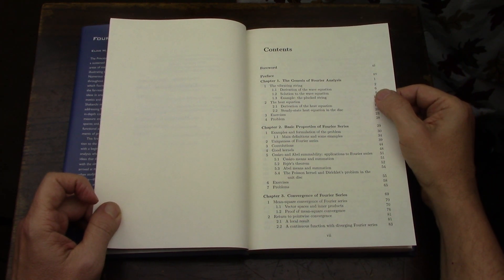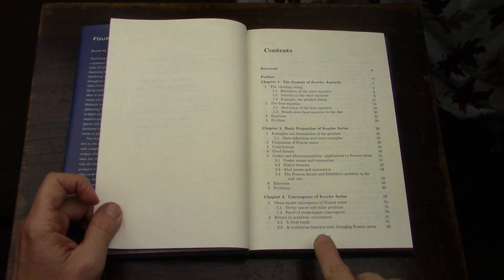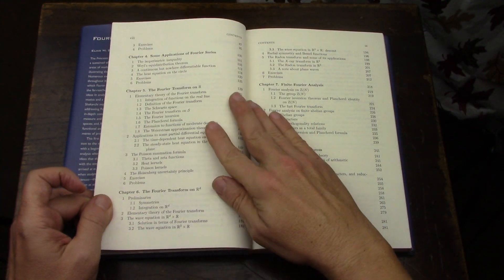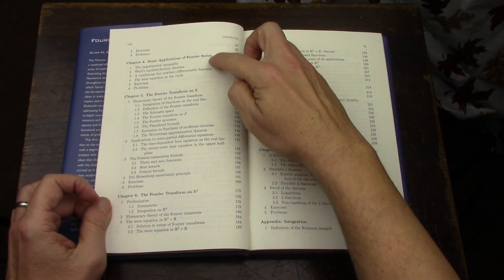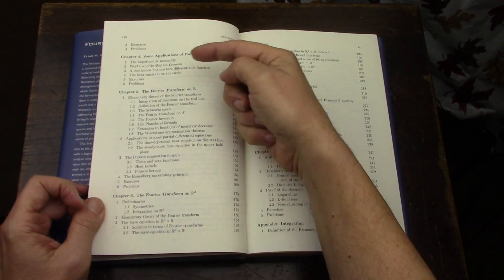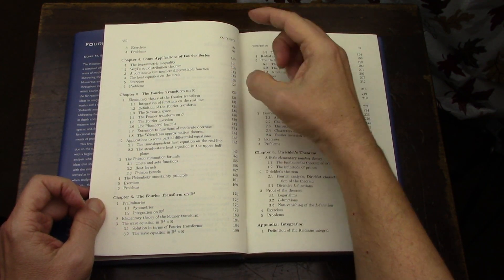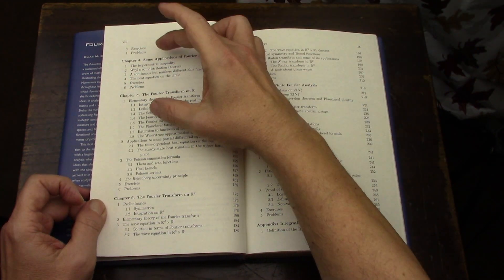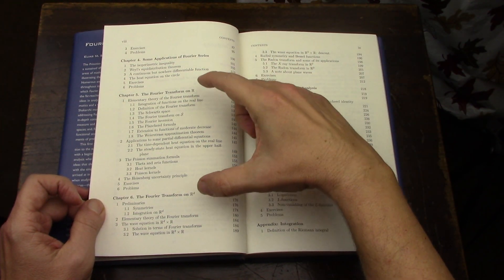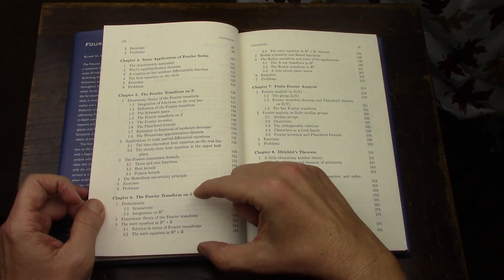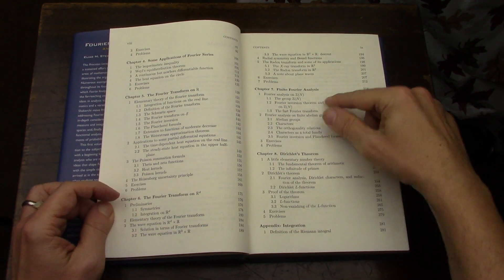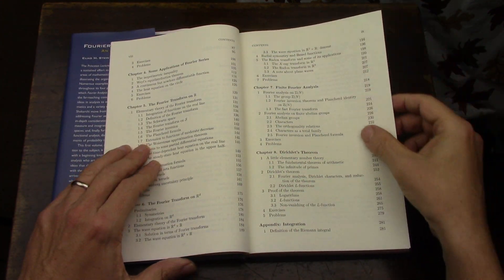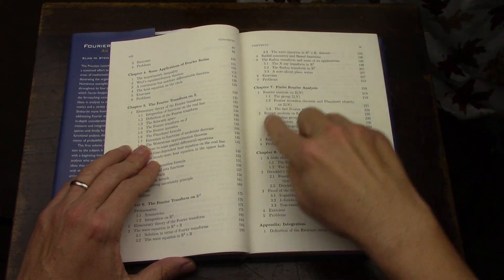These books are now 21 years old. So it's just a Fourier Analysis book. It talks about kernels, talks about convergence of Fourier series, some applications. Then Fourier transform on R and then on R to the n, then finite Fourier analysis, of course, that's a big field in electronics, the fast Fourier transform, the FFT.